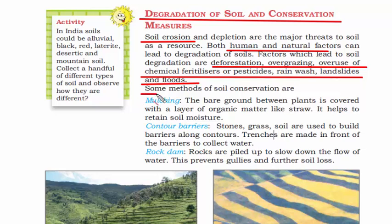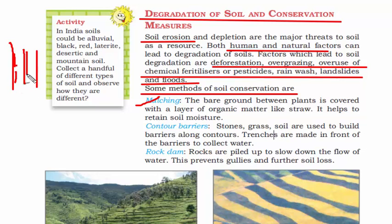The first method to prevent soil erosion is mulching — you put a layer of organic matter in the spaces between crops. This helps retain soil moisture, creating a reserve of moisture that plants can use later. The second method is contour barriers — making barriers of rock or soil between plants so that when you pour water, it stays in between and doesn't wash the soil away.